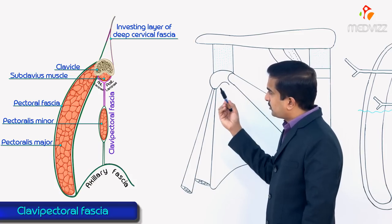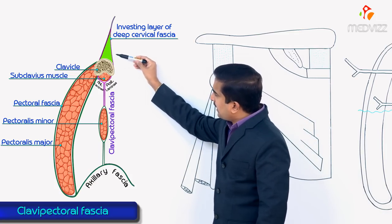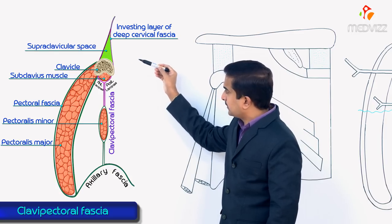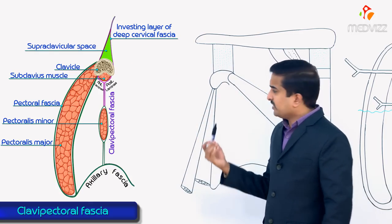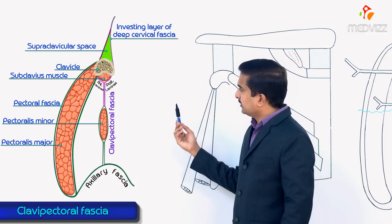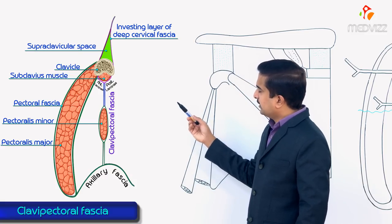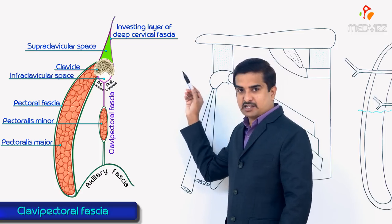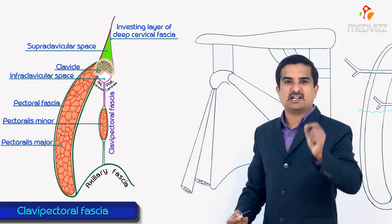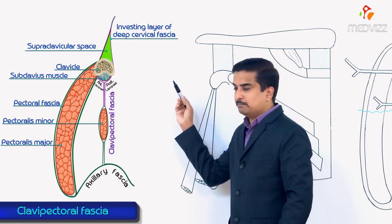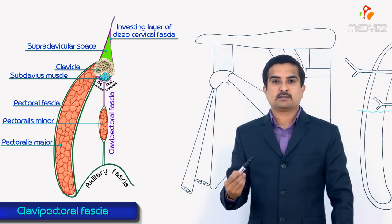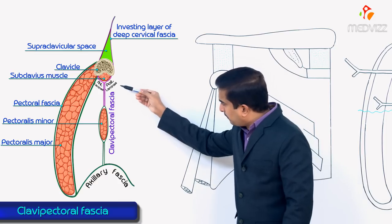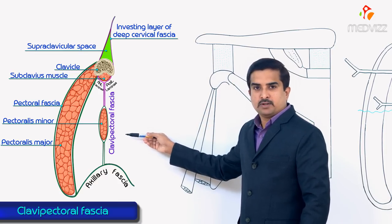In the superior aspect of the clavicle, the investing layer of the deep cervical fascia splits to form the supraclavicular space. Similarly, inferiorly, the clavipectoral fascia splits into two laminae to form the infraclavicular space, which encloses the subclavius muscle.